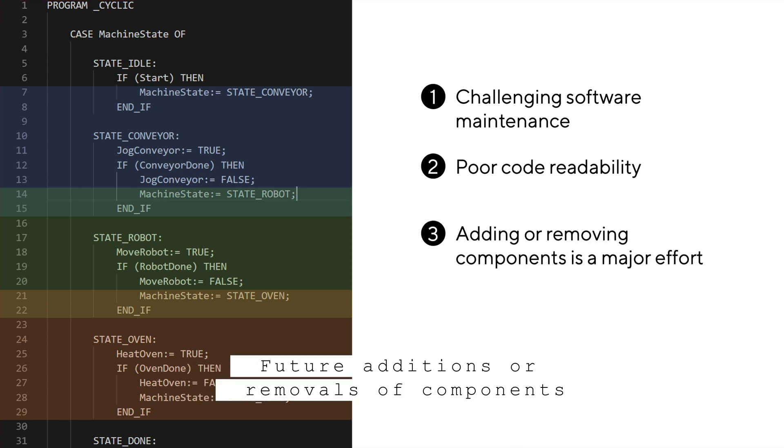Future additions or removals of components turn into major efforts. Let's say the robot is no longer necessary, and instead the conveyor can drop the parts off directly in the oven. This change affects all three components within the machine manager, and creates risk for each of these when they're modified. The conveyor component now transitions directly to the oven component in the sequence, and the two must agree on the handoff details.